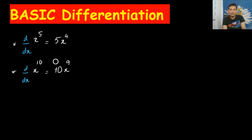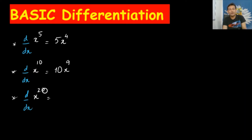Something is happening: 10 is becoming 9, and 5 is becoming 4. The power is becoming the coefficient: this 5 comes here, this 10 comes here. One more example — I'm writing 20x to the power 10 — d/dx of that gives 10 times 20, so the power 10 becomes the coefficient.